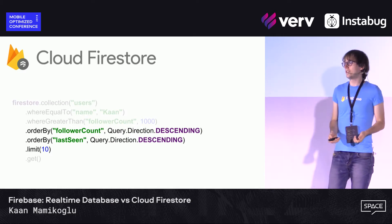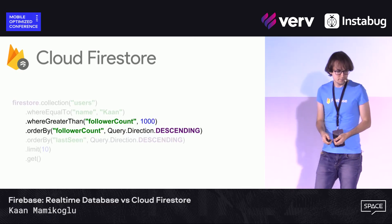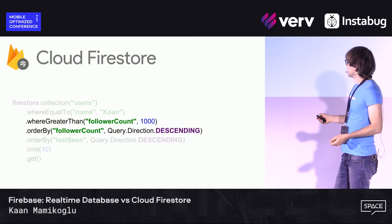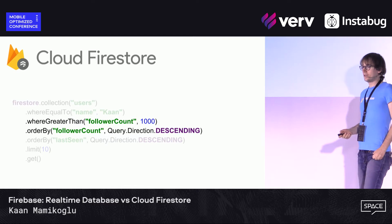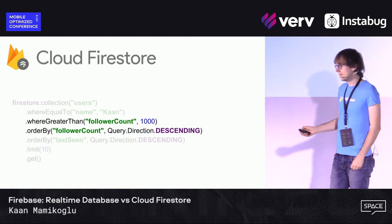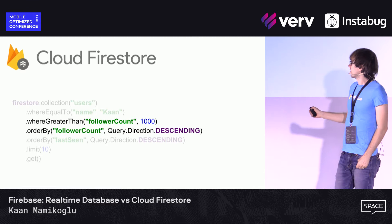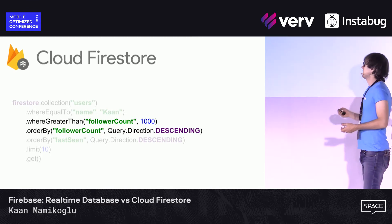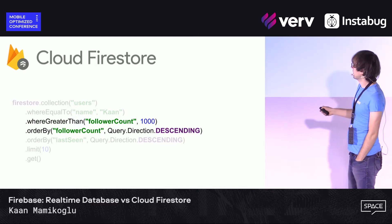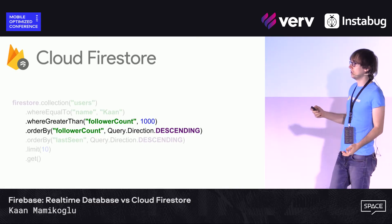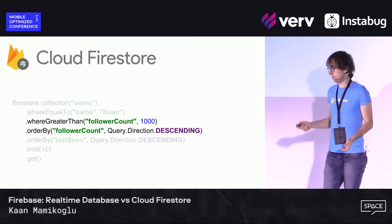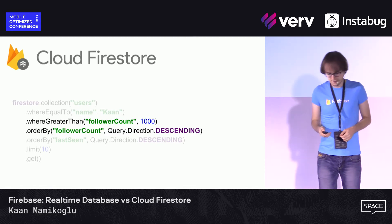You can limit results to 10. However, there's one limitation: when using an inequality comparison like whereGreaterThan on follower count, the next orderBy value you use must be the same field as the inequality comparison. These two have to be the same variable — it's a limitation, but it exists.